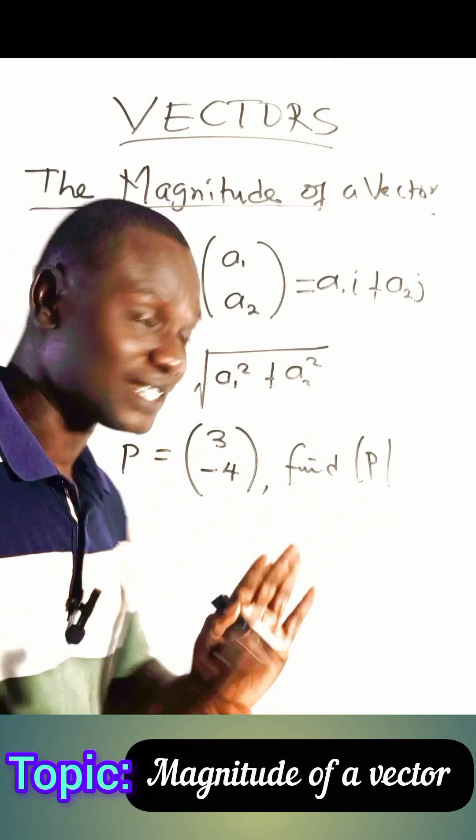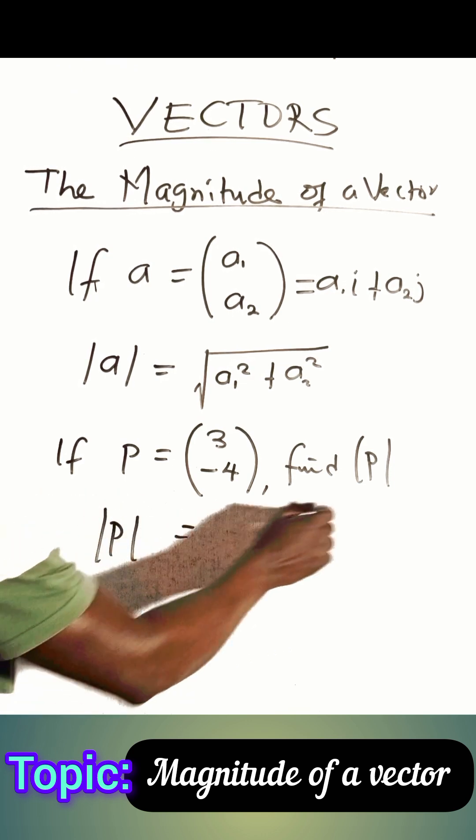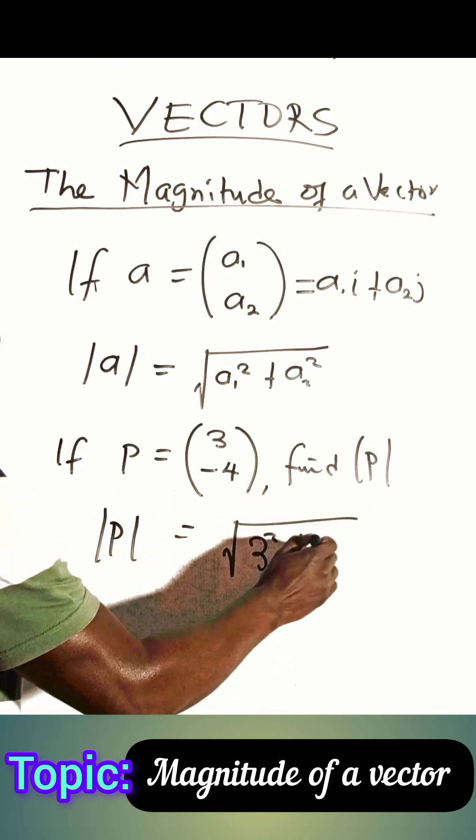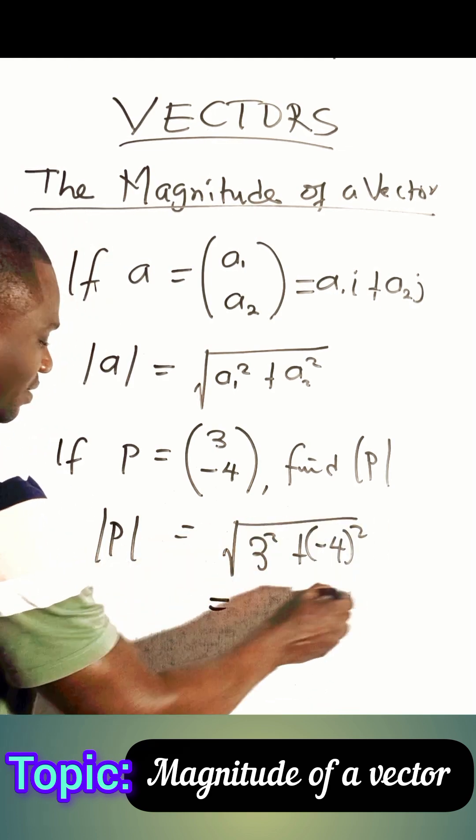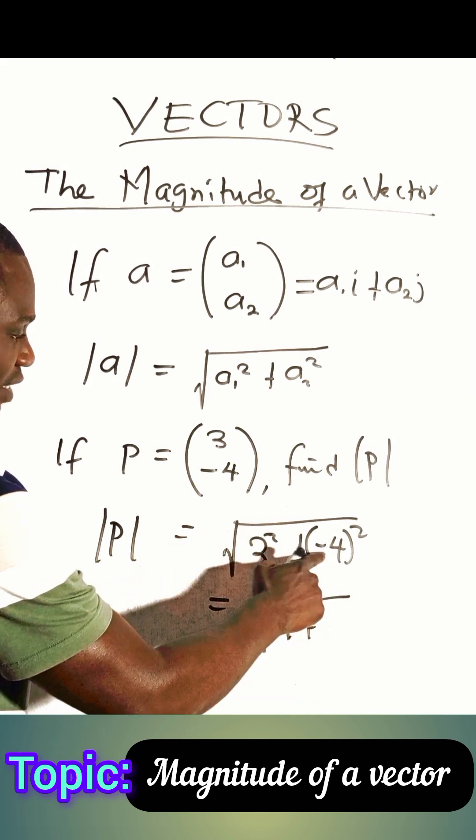It is simple. Following this formula, the magnitude of P will be equal to the square root of 3 squared plus minus 4 squared. This will be 3 squared is 9, minus 4 times minus 4 is 16.